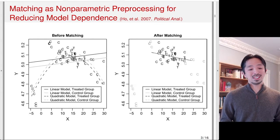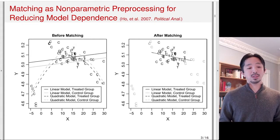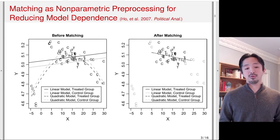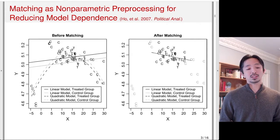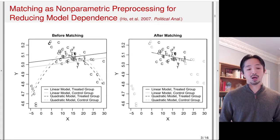In this slide, you see two figures: before matching on the left and after matching on the right. T represents the treated unit, C represents the control unit. For illustration, there's only one covariate X on the horizontal axis, and the outcome is plotted on the Y axis. We use two types of models: a linear model and a quadratic model, separately fit for the treated and control group. The gap between these two lines represents the treatment impact. Before matching on the left, there are some extreme values — large X and small X has lots of control units, but there are no treated units there. The control units are spread across the entire range of X, whereas the treated units are concentrated in the middle.